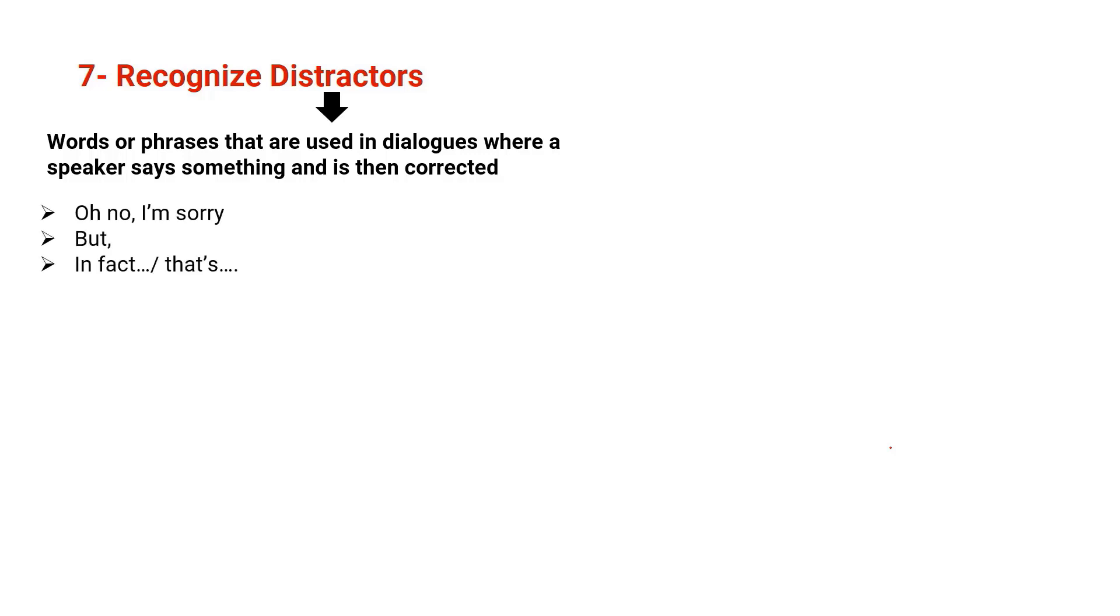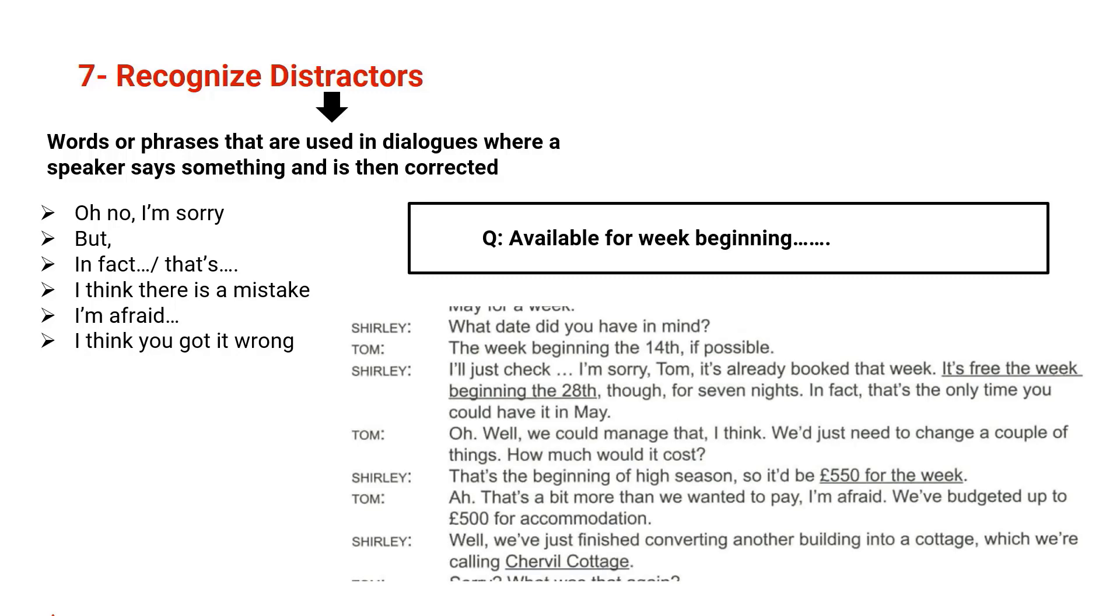The seventh strategy is recognizing distractors. And it's very important to learn it, because from the name you know that there is something that distracts you. Distractors are words or phrases that are used in dialogues where a speaker says something and is then corrected, which means that you have to wait. You don't have to rush, because this distractor is there to confuse you and make you choose the wrong answer. So we have to focus and wait. Distractors come with these words and phrases: oh no I'm sorry, but, in fact or that's, I think there is a mistake, I'm afraid, I think you got it wrong. Now let's see how.